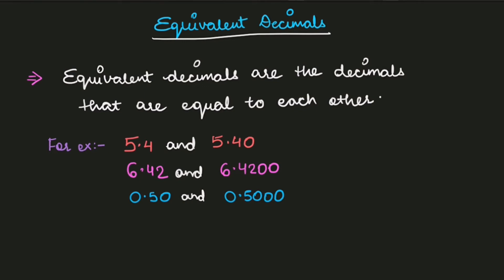In the last example, the decimal is 0.5. What did I do? In the first decimal one zero is added, and in the other one three zeros are added after the 5, but there is no difference — it will have no impact on the overall decimal. These decimals are still the same.